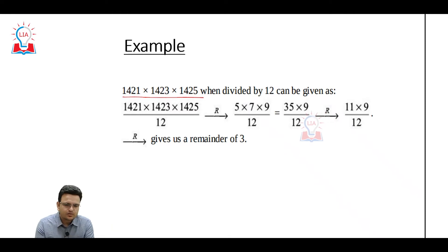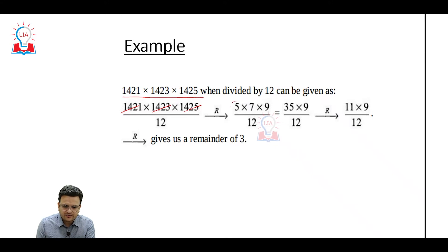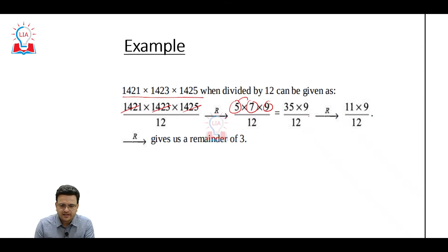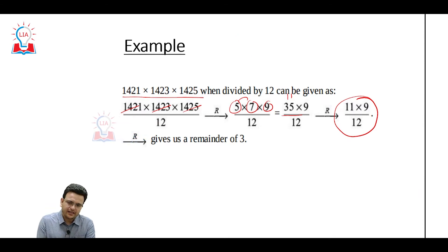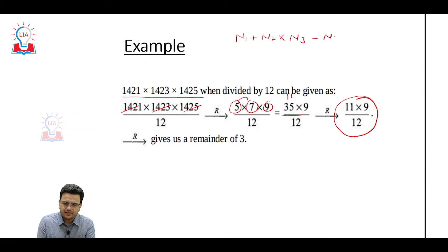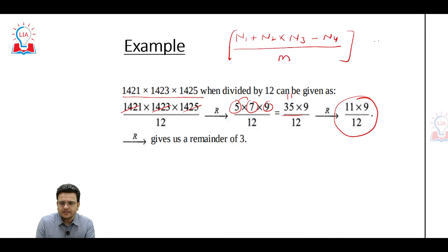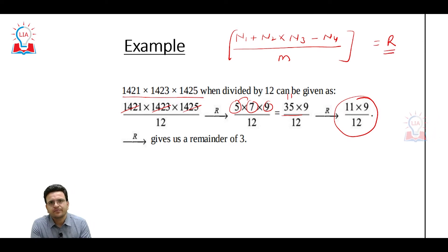What will be the answer? The same way we are getting the remainder of each term. It is 5, 7, 9, then again 5, 7, 35 — we can see that it is 11, and again 11 × 9, we get the answer. So here what we have learned: whenever numbers are given like n1 + n2 × n3 − n4 divided by M, we can get the remainder in a very easy way.